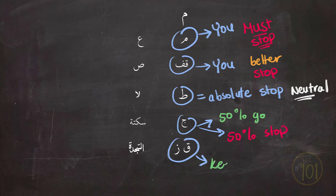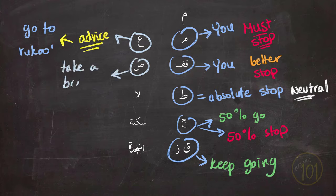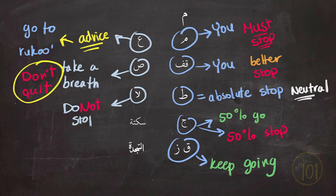Qaf and Zay, they both mean that it is better to keep going. Ayn refers to a good spot at which you can go to Rukua because it's the end of a teaching or a story. Saad refers to a place where you can take a breath but you can't stop recitation. La refers to a place at which you cannot stop and especially you cannot end your recitation.